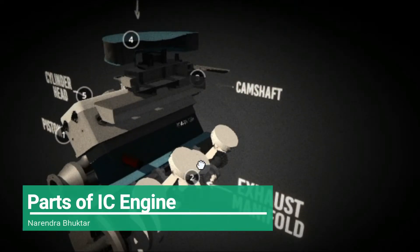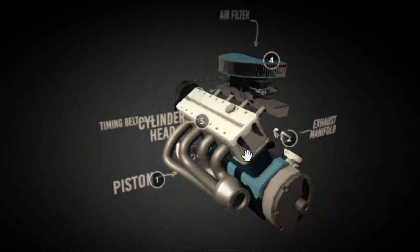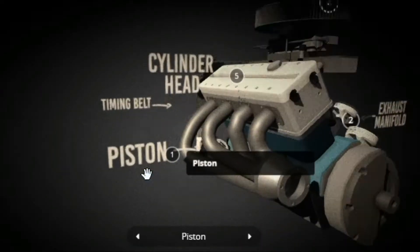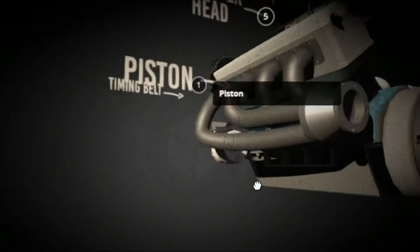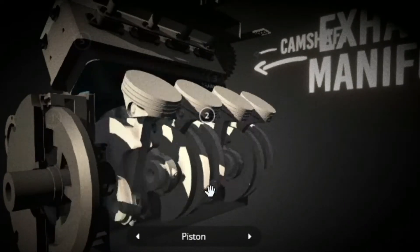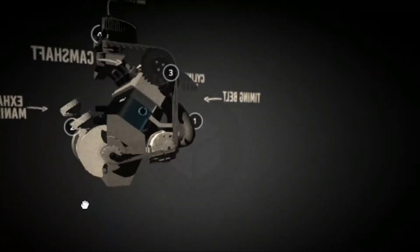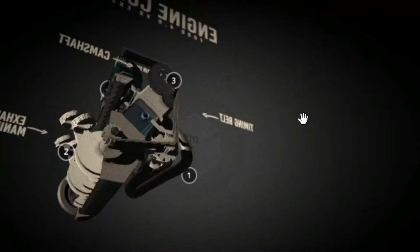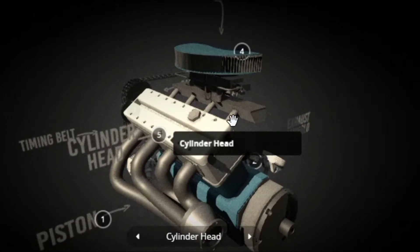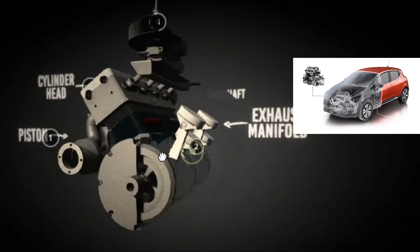Today we will learn about main parts of an IC engine. An internal combustion engine is a heat engine in which combustion or burning of fuel takes place inside the cylinder of the engine. A high temperature and pressure force generates after burning of fuel. This pressure force is used to move the vehicle or rotate wheels by use of some mechanism. In an engine, many parts work together to achieve the goal of converting chemical energy of fuel into mechanical energy. These parts are bolted together and the combination of all these parts is known as the engine.